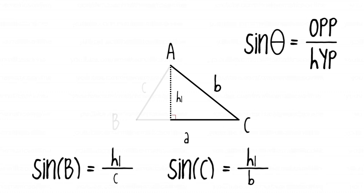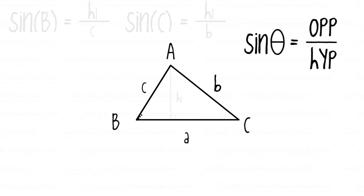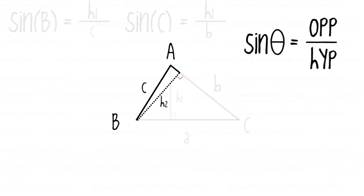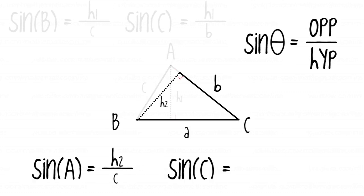We have two equations, one with sine of B and the other with sine of C, but we want to have an equation with sine of A. Looking at the triangle, we have the base at side b and the altitude is going to be h2. We have two right triangles, and therefore sine of A is equal to h2 over c, and looking at the other right triangle, sine of C is equal to h2 over a.